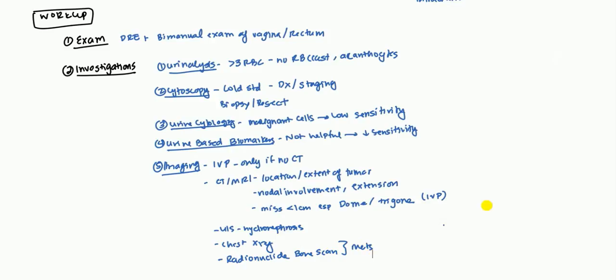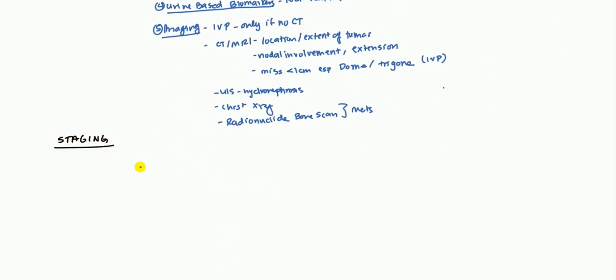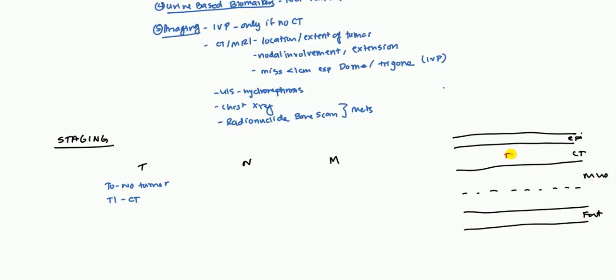So these are different investigations. Now what we'll do is we'll focus attention on how we stage it. So it undergoes TNM staging as you're probably familiar with. T is obviously the size of the actual tumor. If it's T0 that means there's no tumor. T1 means it has gotten to the connective tissue. So actually what we'll do first is we'll kind of go over the histology of the bladder wall. The first layer that you have is the epithelium and right below that is the connective tissue. Below the connective tissue we have a muscular layer which is divided into two and the area up above here is the inner muscular layer and the area below here is the outer muscular layer and then we have perivesicular fat.